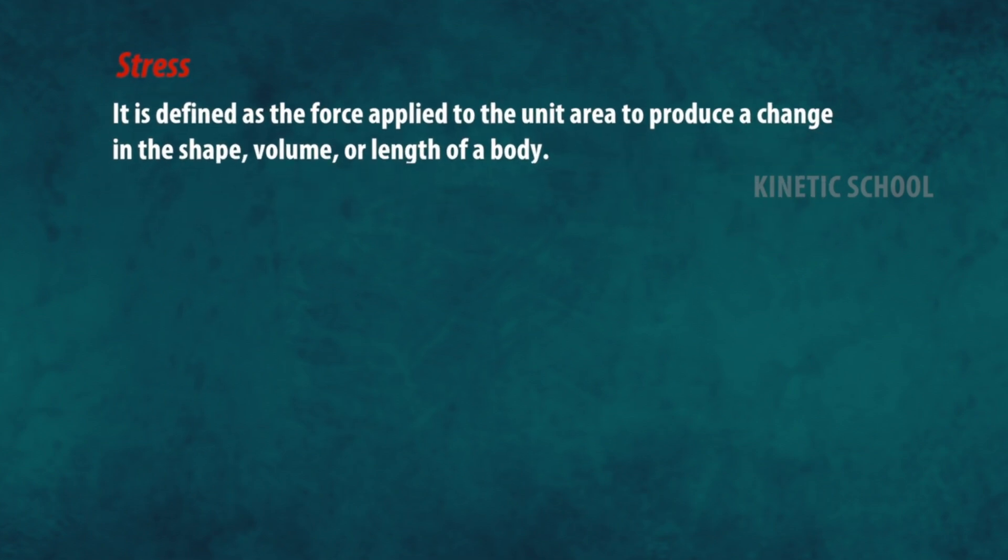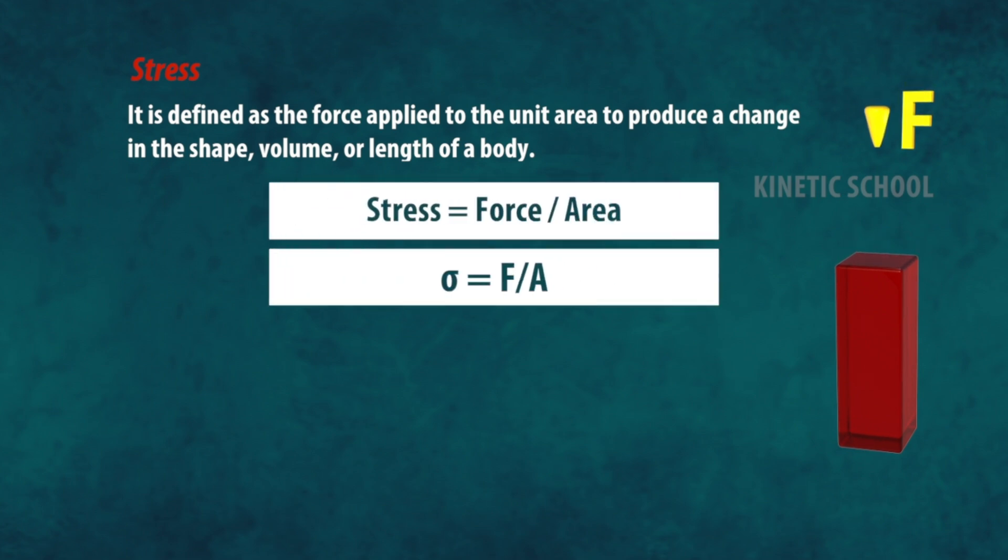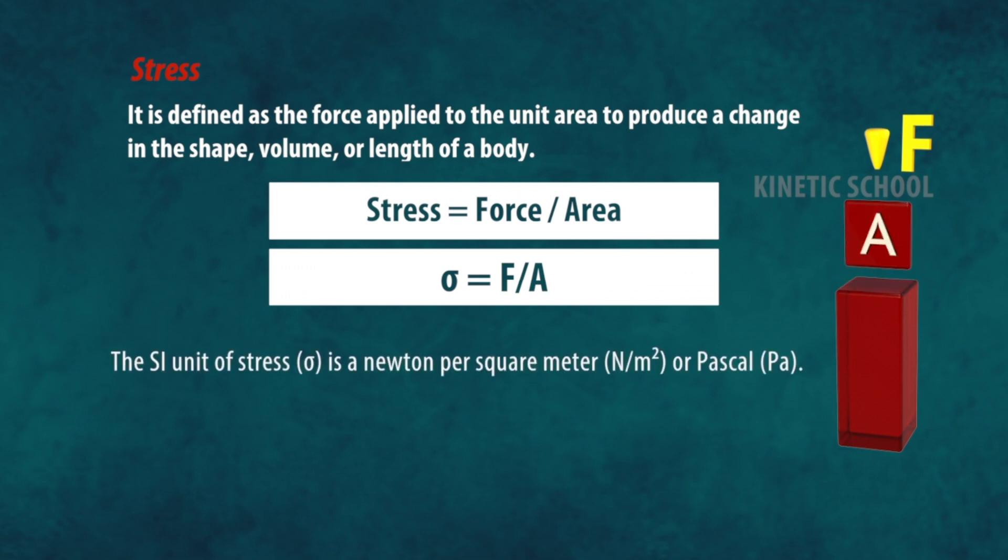What is stress? Stress is defined as the force applied to the unit area to produce a change in the shape, volume, or length of a body. Stress equals force divided by area, so sigma equals F divided by A. The SI unit of stress is Newton per meter square or Pascal.